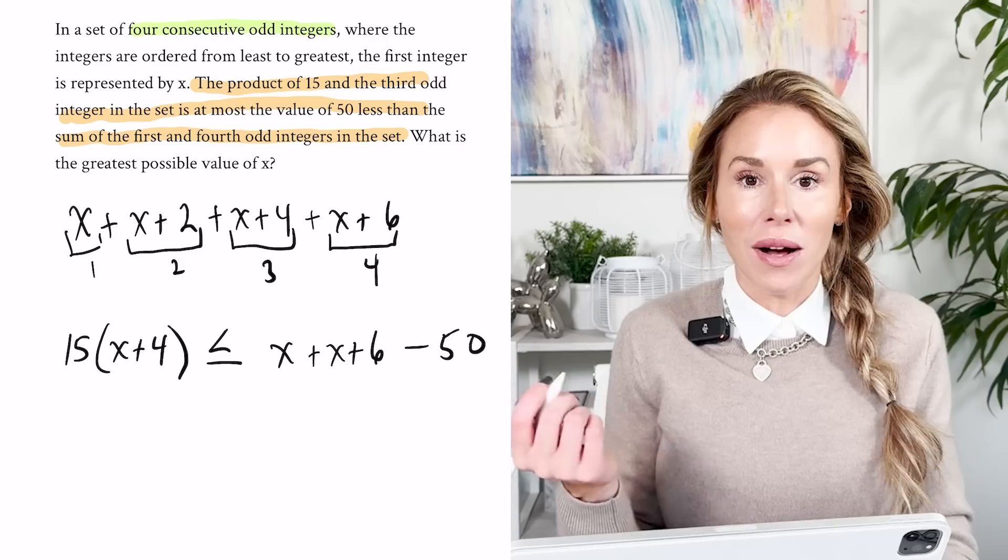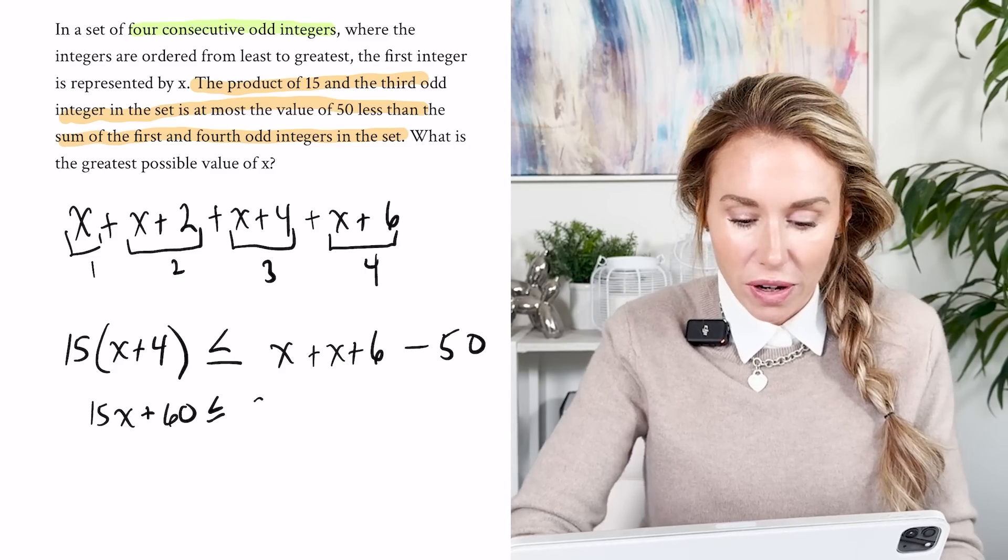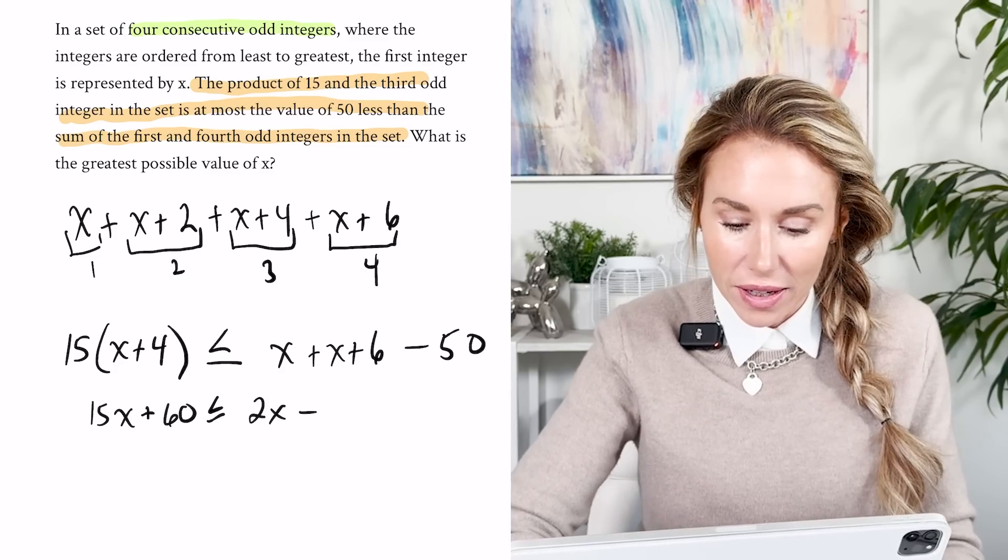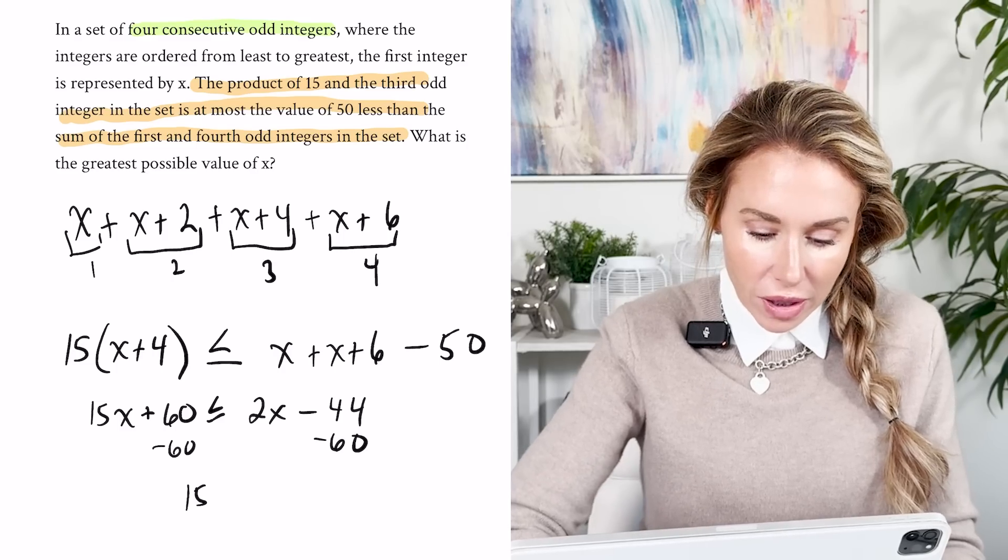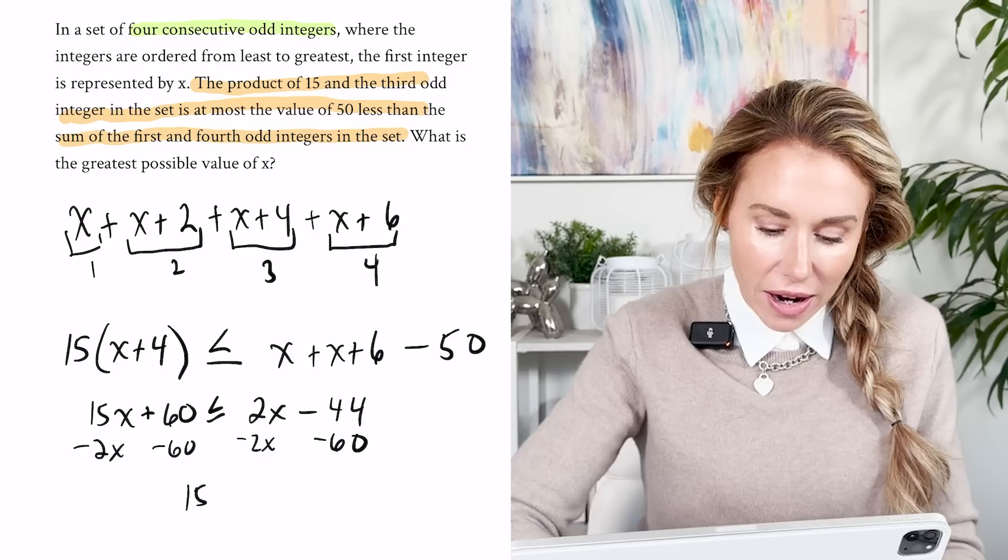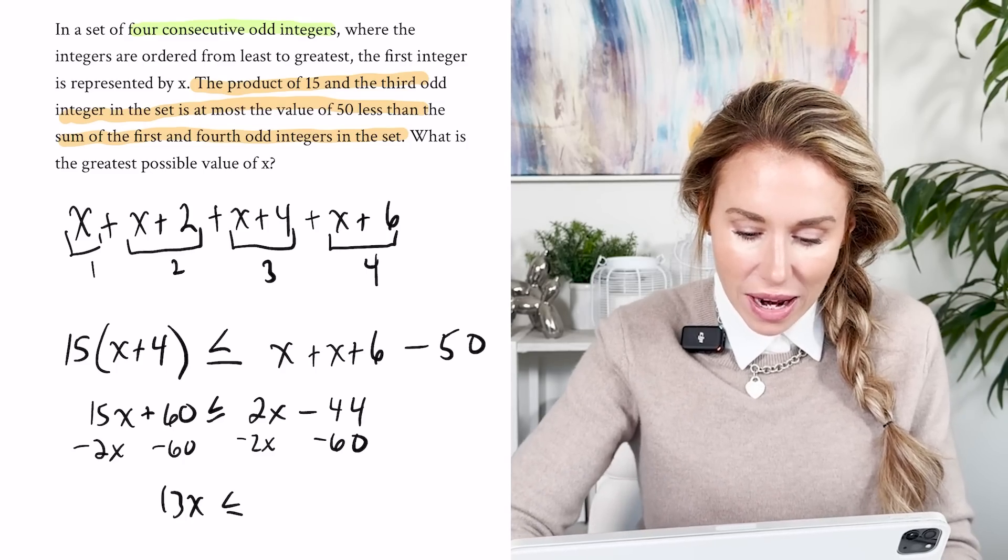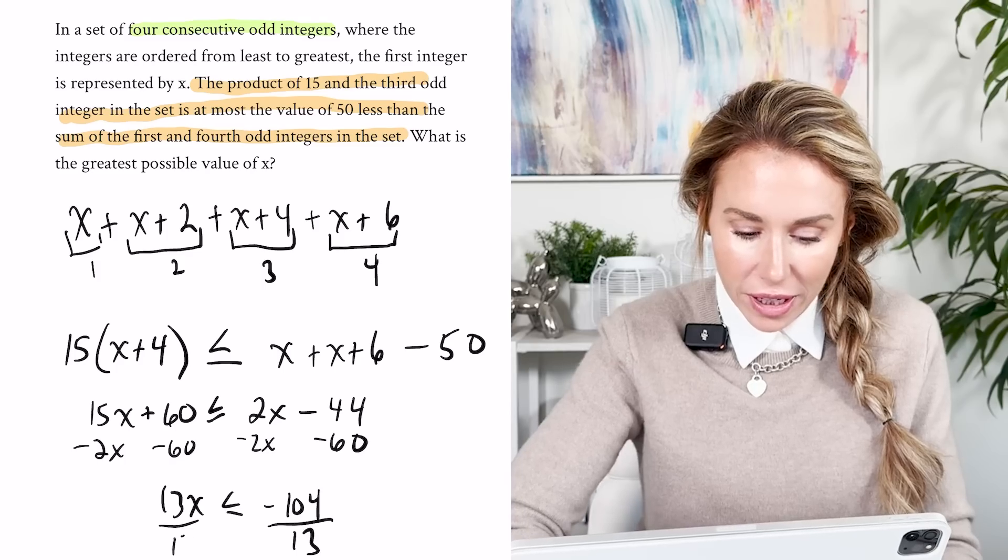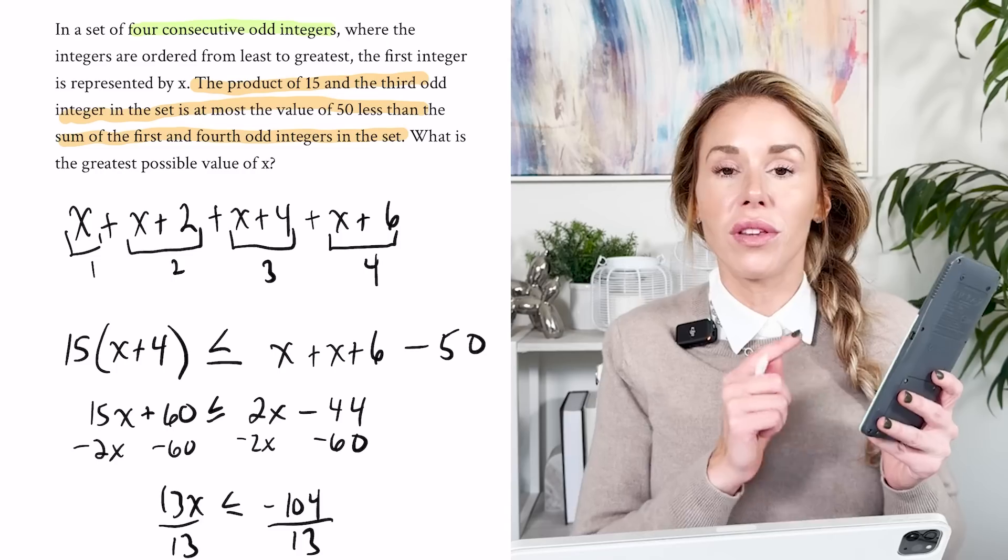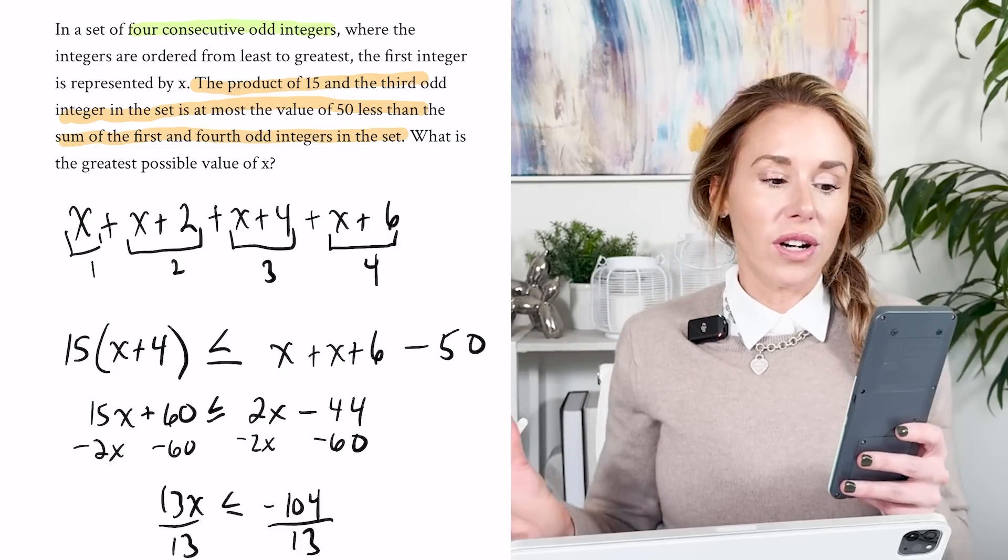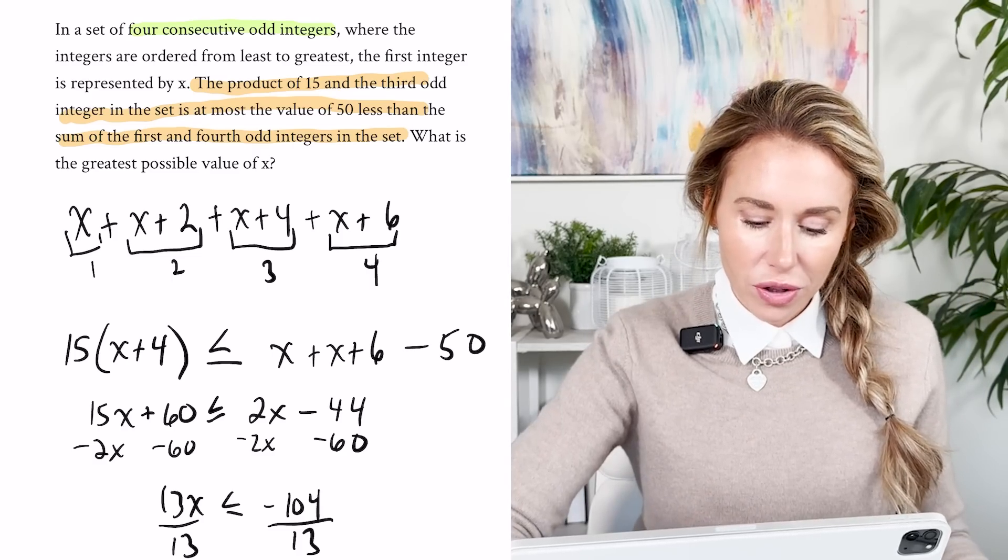Now it's just simple solving, like just going through PEMDAS and taking care of all your steps. So we've got 2x minus 44, and then I'm going to take 60 away. So now I have, and I'll take 2x away actually. So I have 13x is less than or equal to negative 104. We'll divide by 13. Let's see what we get. And I would definitely recommend you bring your calculator with you to the test. Desmos is great for some things, but quick computations are better on the calculator.